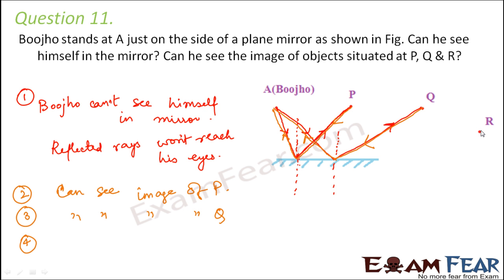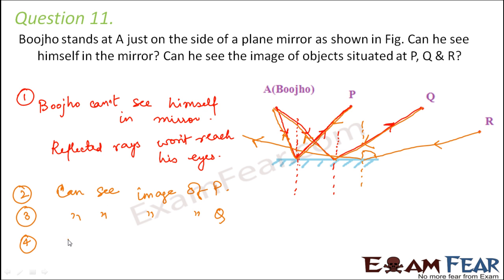For point R, a ray of light incident from R on the mirror would be somewhat like this. Since the angle of incidence equals the angle of reflection, it gets reflected like this — which will not reach Bujo's eyes. Therefore Bujo can't see the image of R. The simple concept is: if the reflected ray from an object reaches our eyes, we see the image; if not, we don't.